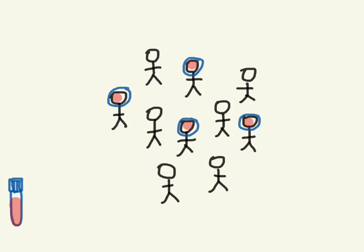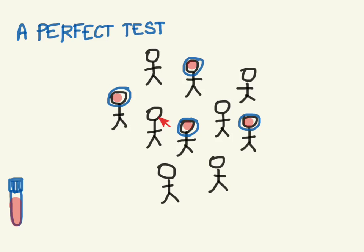This test that we've created here would be a perfect test, in which anybody who has the disease, the test tells us. And anyone who doesn't have the disease, the test is negative for them. So whenever the test is positive, we know that the person has a disease, and whenever the test is negative, we know that they don't.